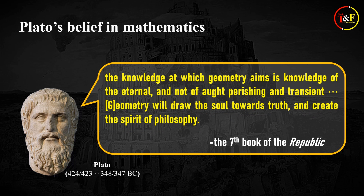If you look at the seventh book of the Republic, written by Plato, he says that 'the knowledge at which geometry aims is knowledge of the eternal and not of art, perishing and transient. Geometry will draw the soul toward truth and create the spirit of philosophy.' From these kinds of remarks, we figure that for Plato and his followers, mathematics, especially geometry, was not just an academic activity, but a spiritual and religious activity. So, in short, mathematics was a religion for them.